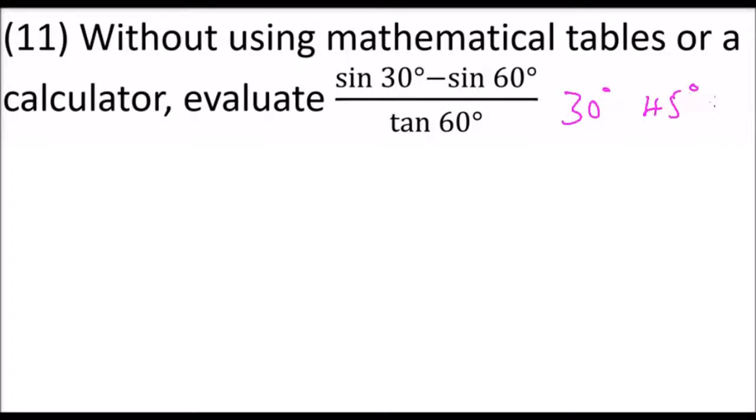Why are they called special angles? Because you can be able to get their trig ratios without using the mathematical tables or calculator. For us to be able to show that, I'm going to use a triangle to demonstrate how we get the trig ratios of these angles and why we refer to them as special angles.